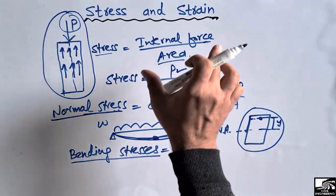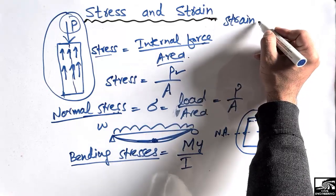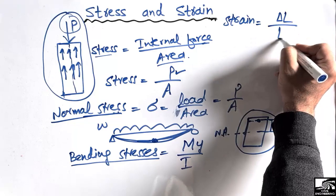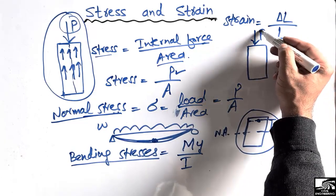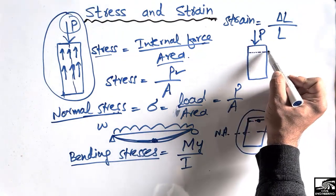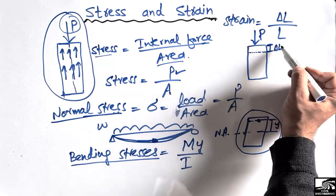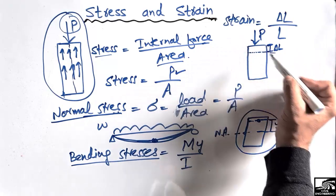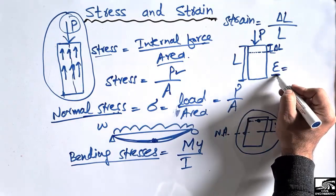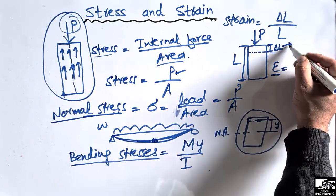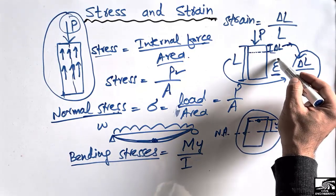Now, what is strain? Strain is basically related to deformation. Strain is equal to the change in length divided by the original length. Consider a column loaded with force P. Due to this load, the column compresses by a distance delta L. Delta L is the change in length, and the original length of the column is L. So strain (epsilon) equals delta L divided by L.